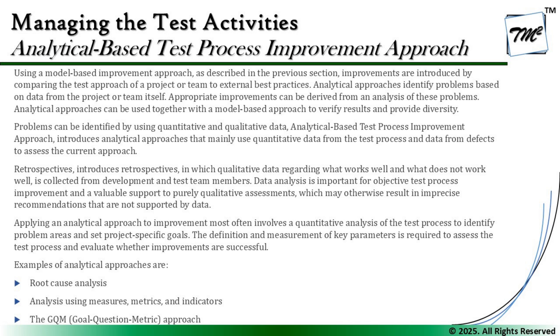Applying an analytical approach to improvement most often involves quantitative analysis of the test process to identify problem areas and set project-specific goals. Definition and measurement of key parameters is required to assess the test process and evaluate whether improvements are successful. These analytical approaches include: root cause analysis, analysis using measures/matrices and indicators, and the GQM - Goal Question Metric - approach. These three techniques bring great efficiency to process improvement.